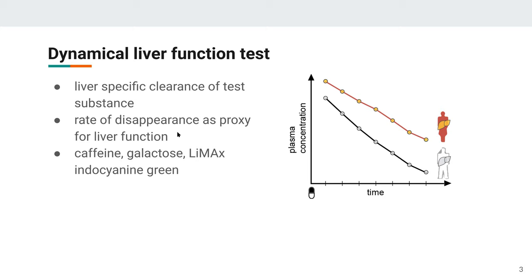You could also use the appearance of a product in the same fashion. The basic concept is you give something specific and then use time courses of the substance in plasma, urine, or saliva to evaluate liver function. There are many such test substances — for instance caffeine, galactose, metacetine used in the so-called LiMAx test, or indocyanine green (ICG), which we use here. The liver is a metabolic hub of the body with many different pathways, so different test substances can test different liver functions.